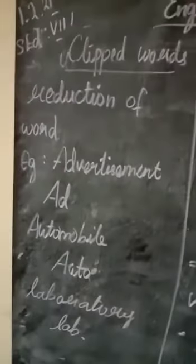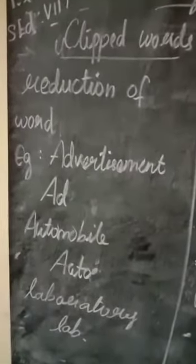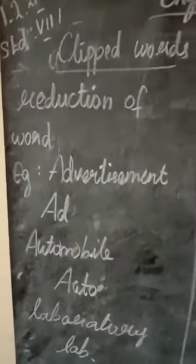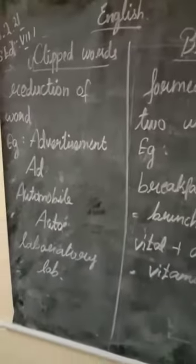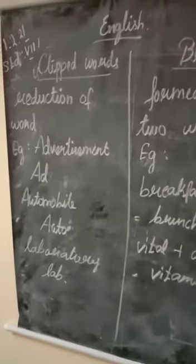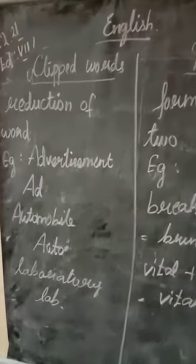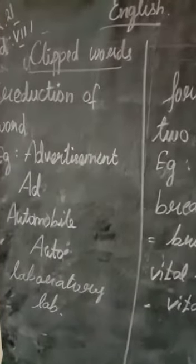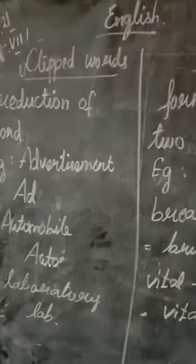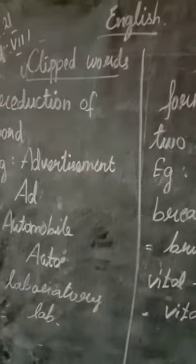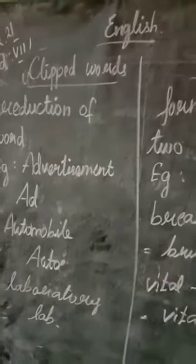Clipped words — what does it mean by clipped words? There's a reduction of a word. So if you have a complete word, you can remove parts of it and reduce it, and you can say a short-form word.